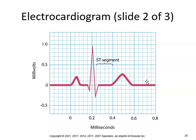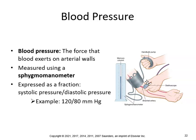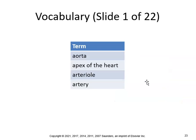Blood pressure is the force that blood exerts on the artery walls, measured using a sphygmomanometer. It is expressed as a fraction: systolic over diastolic, with a normal reading of 120 over 80.